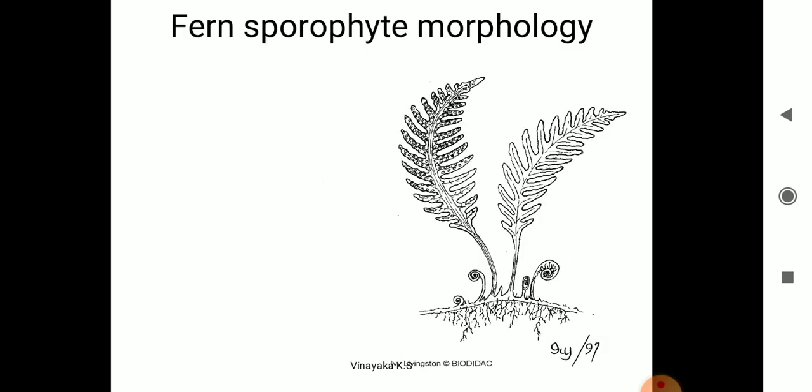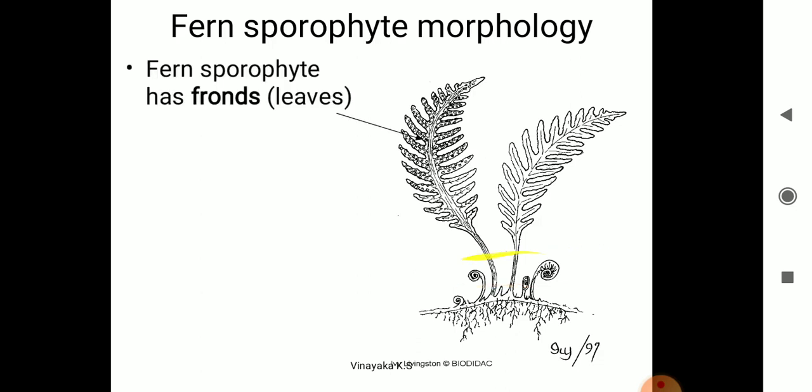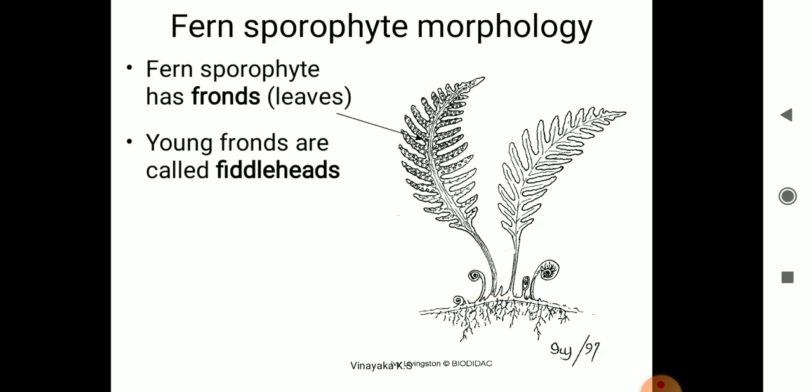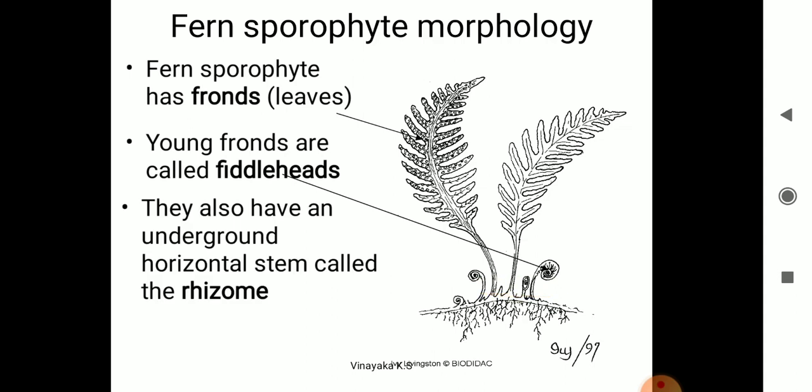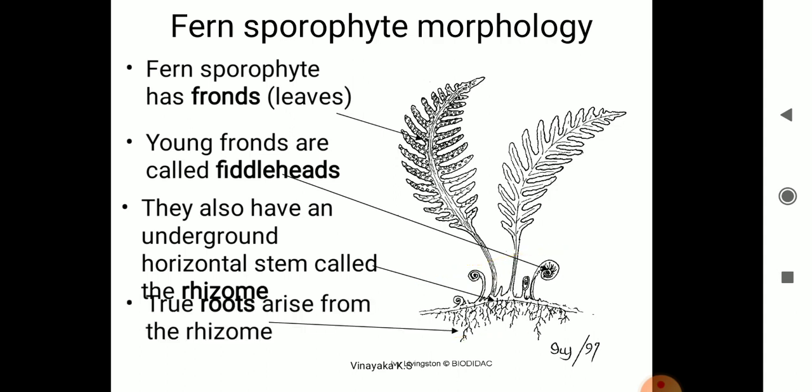In the case of pteridophytes, the sporophyte has a longer duration than the gametophyte — the gametophyte has a shorter lifespan compared to the sporophyte. In bryophytes, the gametophyte has the long life cycle and the sporophyte depends on the gametophyte; but in pteridophytes the sporophyte is independent of the gametophyte. The young fronds are called fiddleheads, showing circinate vernation. Rhizomes are present, and roots arise from the rhizomes.